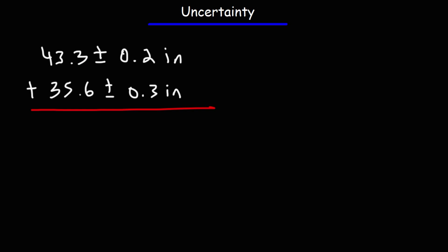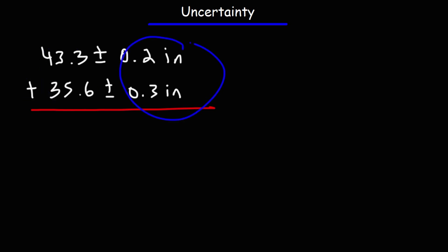When performing operations, you would simply add or subtract those numbers based on the sign. However, when dealing with uncertainty, regardless of whether this is a plus or a minus sign, you would always add the uncertainty values to each other.